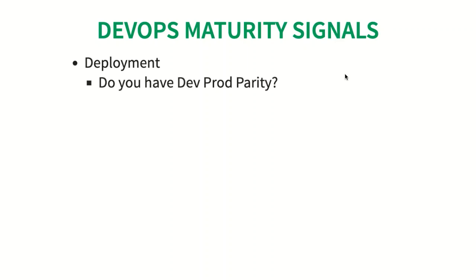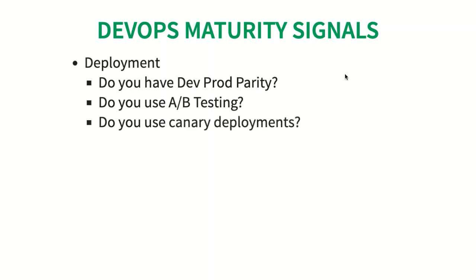Do you have dev-prod parity — are your dev environments very similar to your production environments? If they are, you will find defects early. Do you use A/B testing? If you have multiple options for implementing a specific feature, you can use A/B testing to see what your end users prefer. Do you use canary deployments when making a new release?